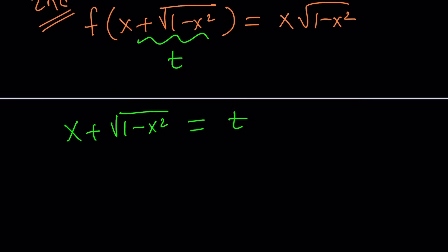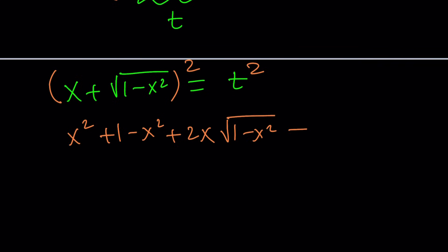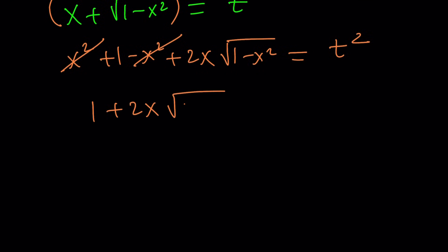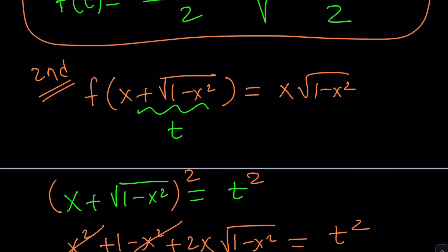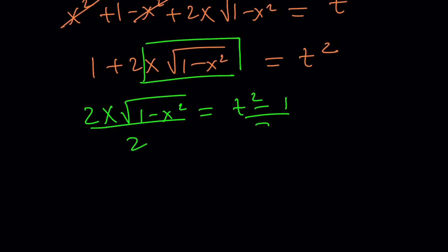If you just square both sides without isolating the radical, it looks a little messy but watch: you square the first term, square the second term — a squared plus b squared — and then 2ab gives you the cross term, and that equals t squared. The x squared terms cancel nicely, leaving 1 plus 2x times the square root of 1 minus x squared equals t squared. My goal is to solve for x times the square root of 1 minus x squared, because it appears on the right-hand side. Subtract 1 from both sides, then divide by 2, and you're done.